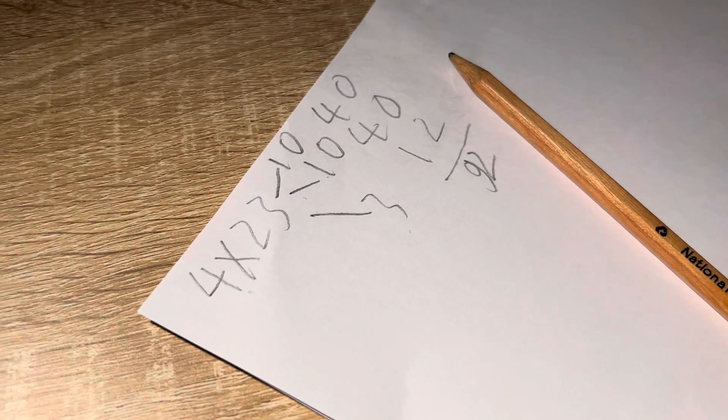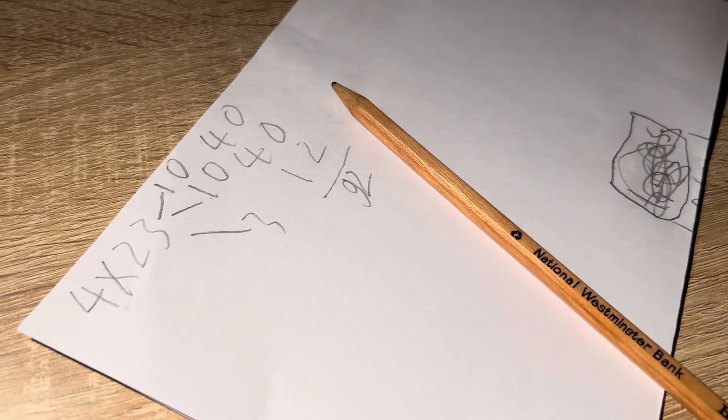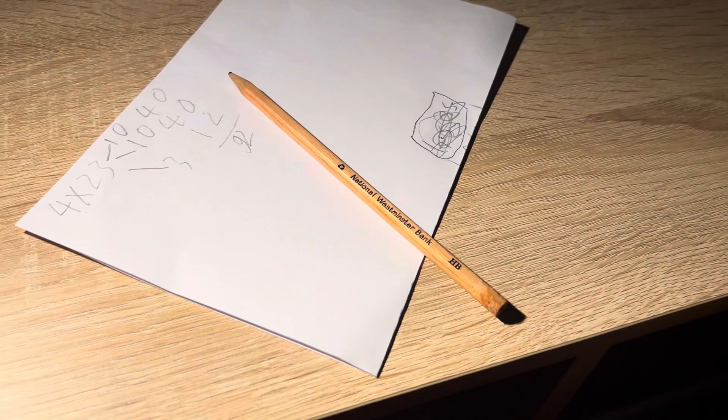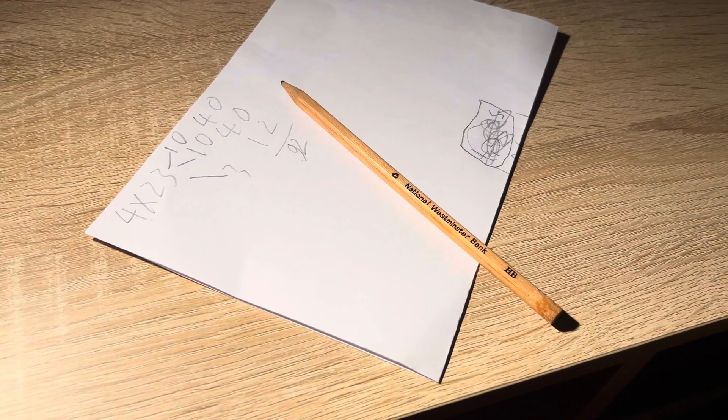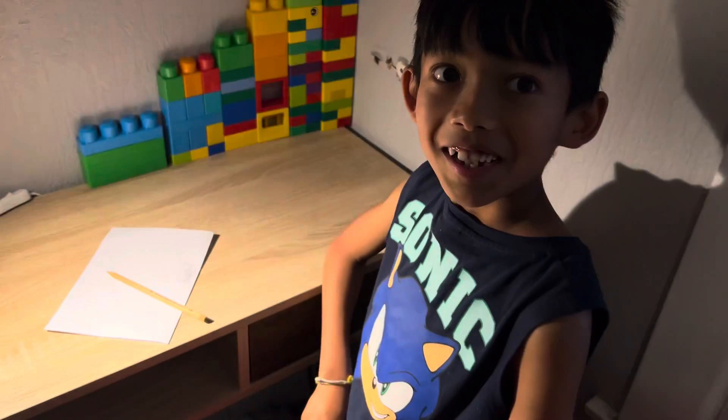So when you see a bigger number against a small number, you can break it down to small pieces that's easy for you to calculate, isn't it? Yes, that's good. Yeah, that's an easy way to calculate. Thank you. Good.